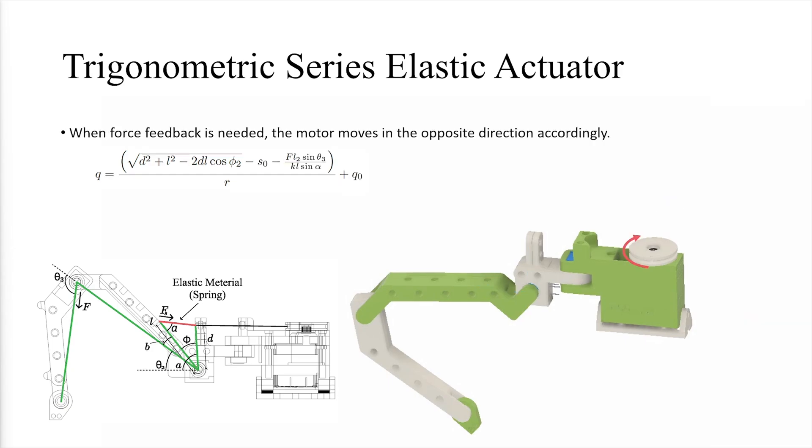When force feedback is required, the motor moves in the opposite direction to compensate and provide the necessary feedback to the user. This interaction between the joint, the elastic material, and the motor allows for a smooth and responsive force feedback system.